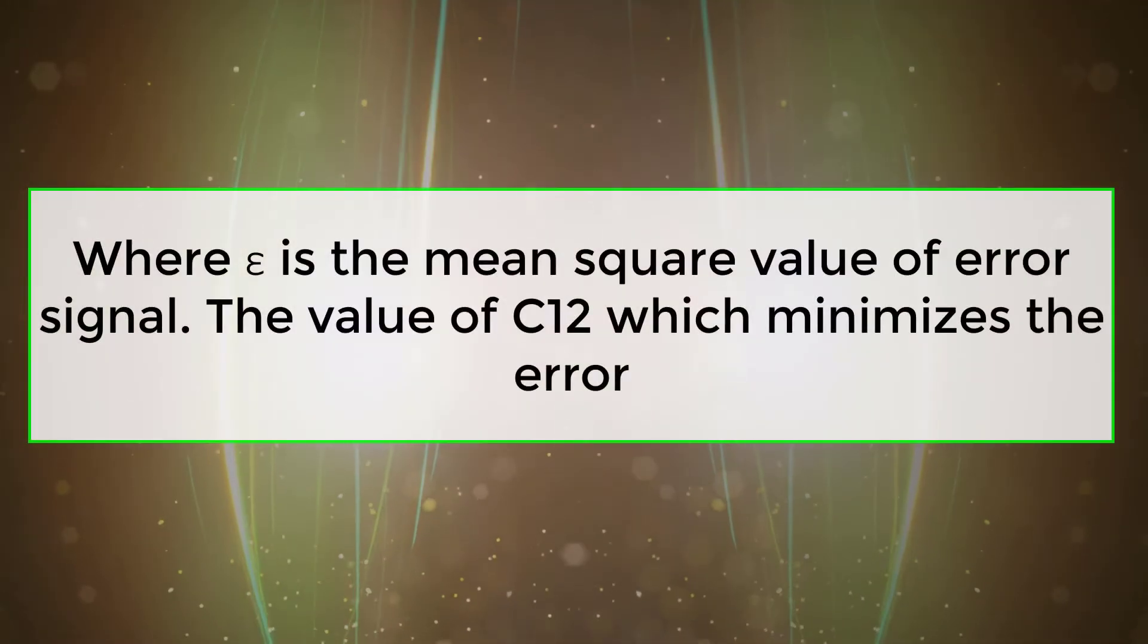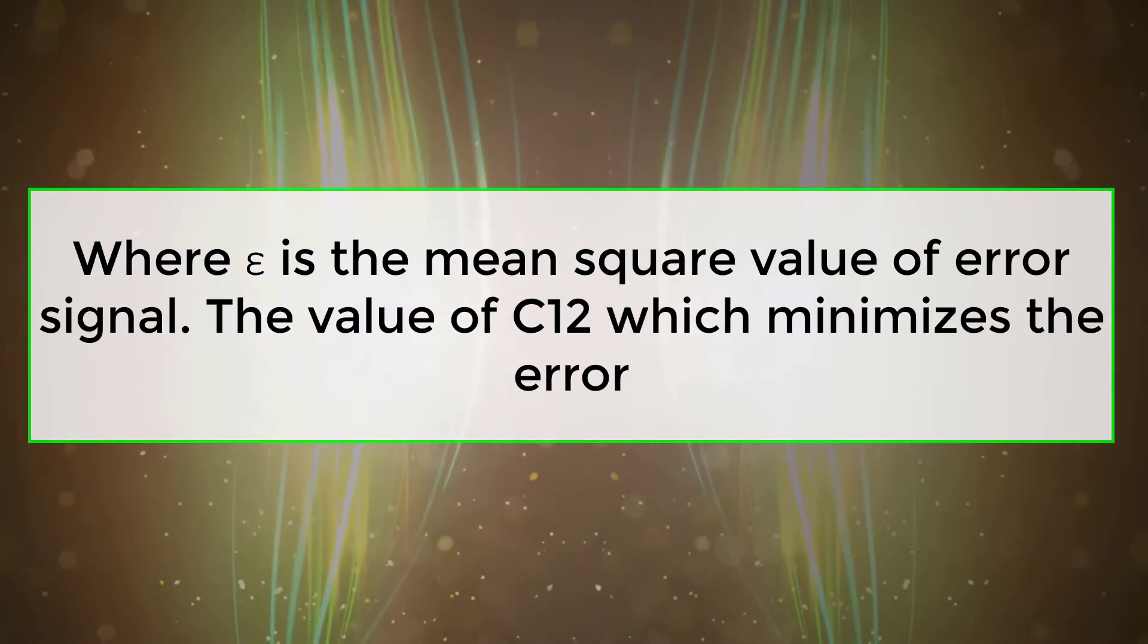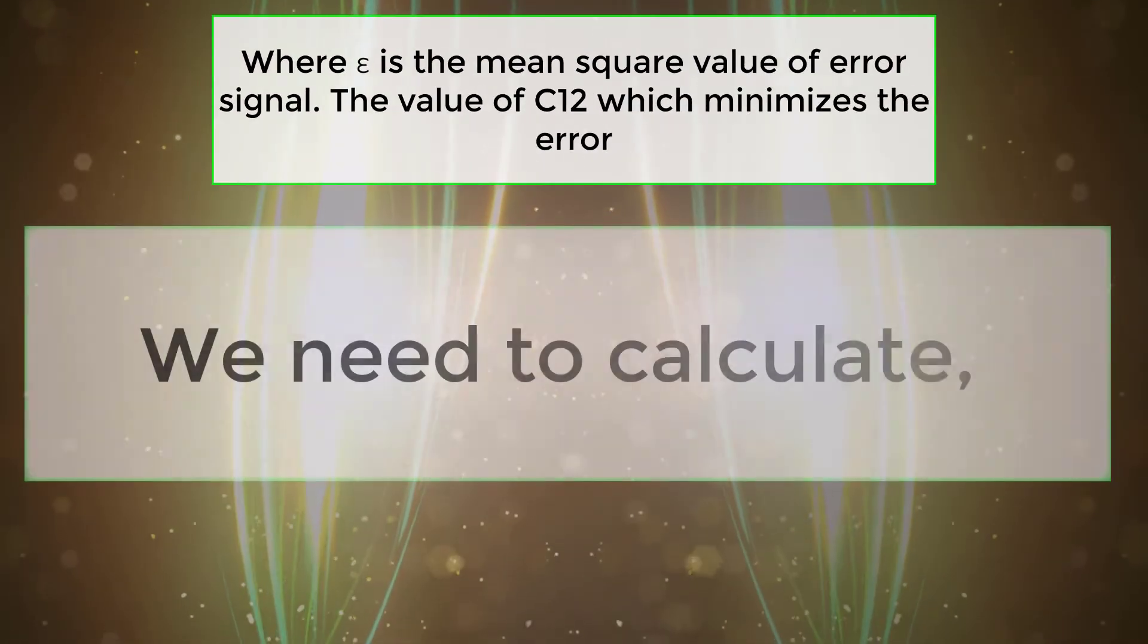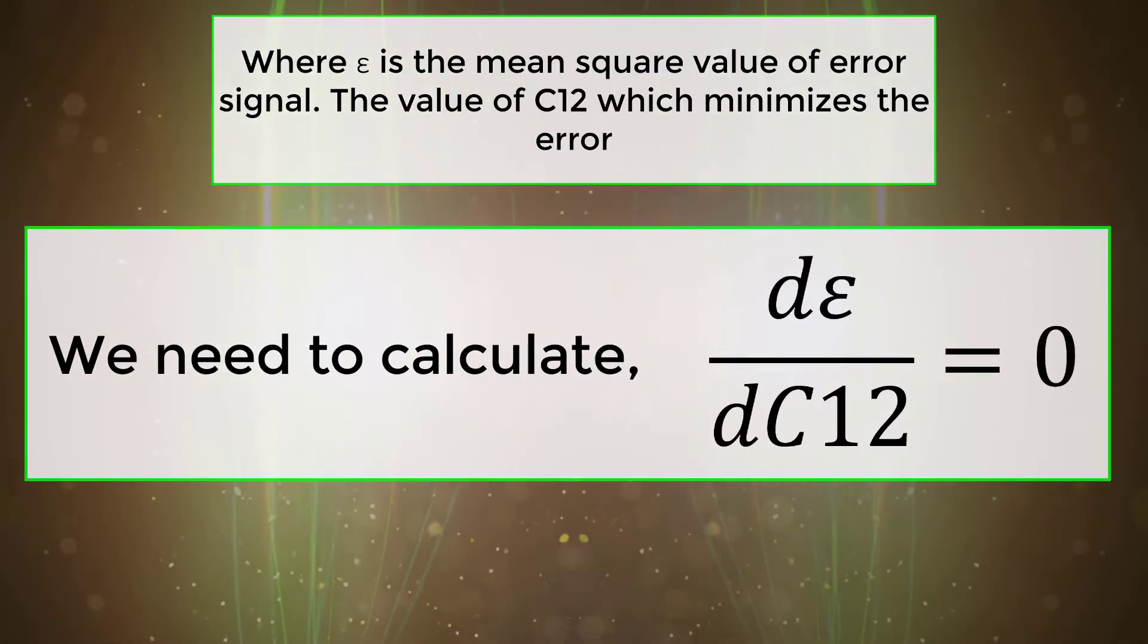Where epsilon is the mean square value of error signal, the value of C12 which minimizes the error. We need to calculate d epsilon by dC12 equals zero.